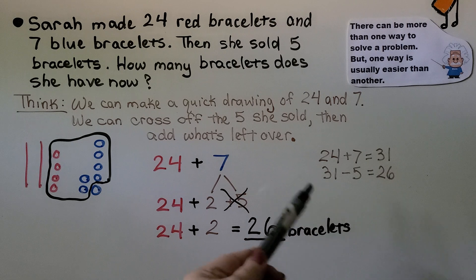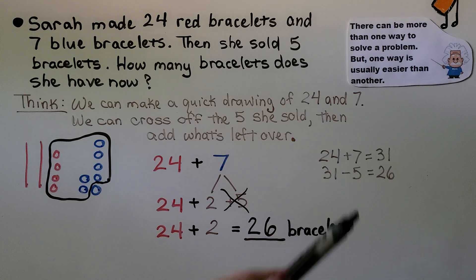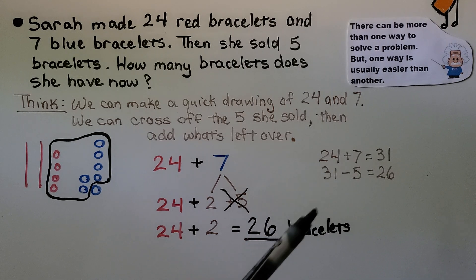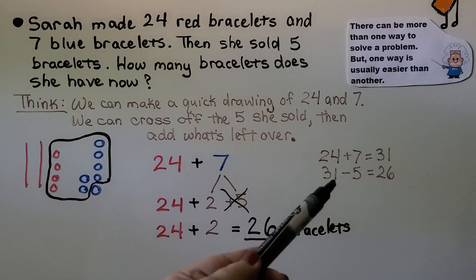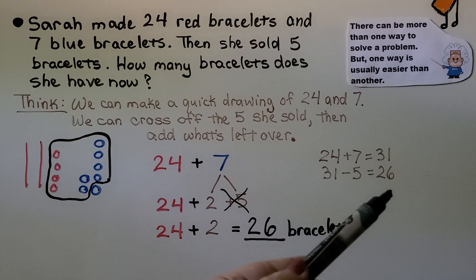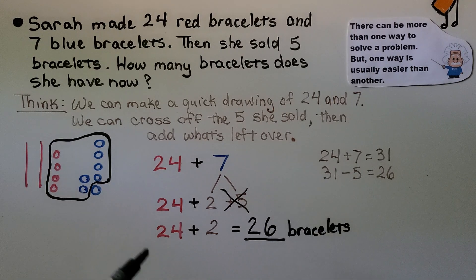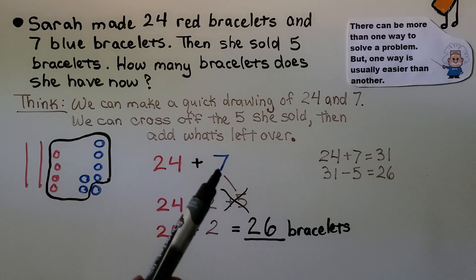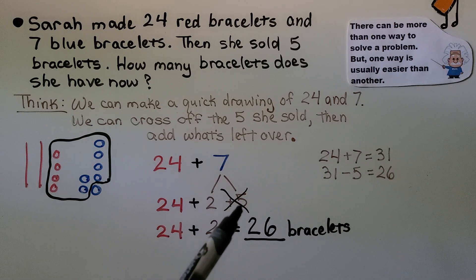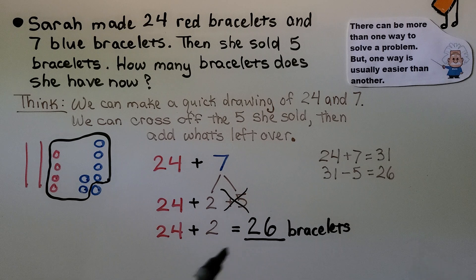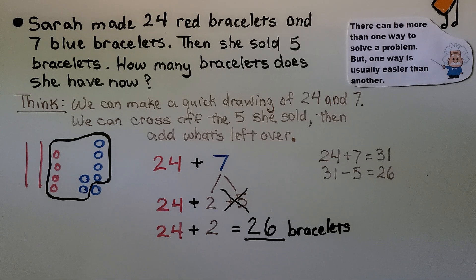Then we could have taken the 5 away and then we would have had to figure out 3 tens and 1 one minus 5. And it was a lot quicker and easier to just break the 7 into a 2 plus a 5, remove the 5, and then add the 2. Do you see how I did that? So one way could be quicker and easier than the other.